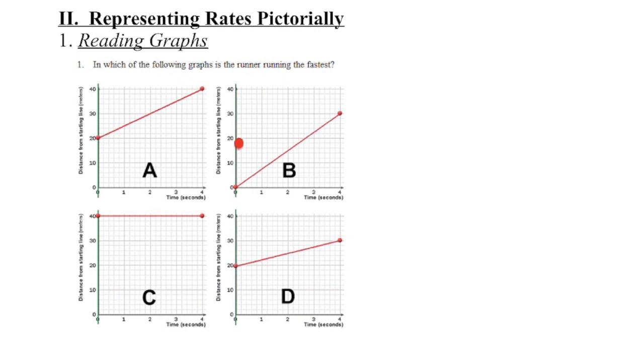Person B, they changed a distance of 30 meters in 4 seconds, and in graph D, they changed a distance of 10 meters in 4 seconds.